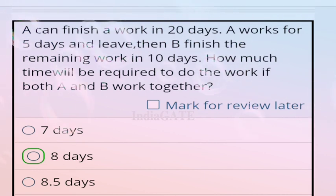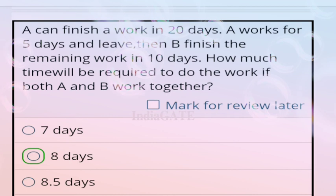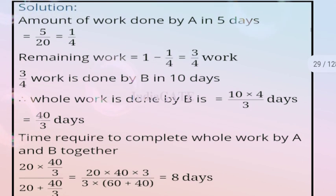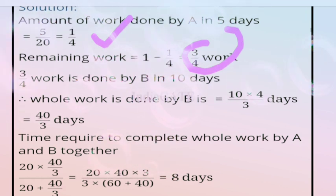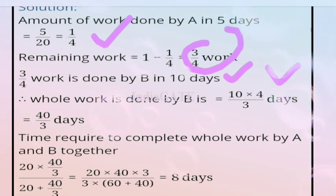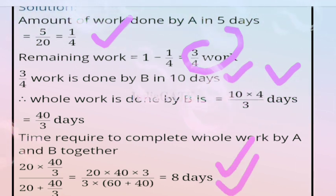Next question: A can finish work in 20 days. A works for 5 days and leaves. B finishes the remaining work in 10 days. How many days will A and B together take? Correct answer is option B, 8 days. Work by A in 5 days = 5/20 = 1/4. Remaining = 3/4. B finishes 3/4 in 10 days, so B alone does full work in 40/3 days. Together: (20 × 40/3)/(20 + 40/3) = 8 days.